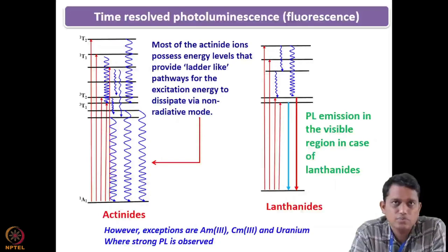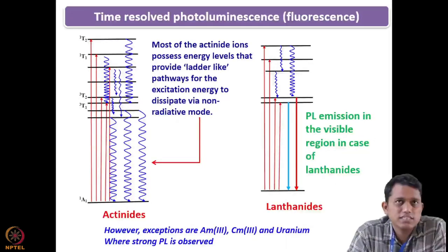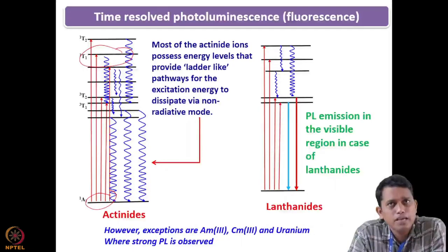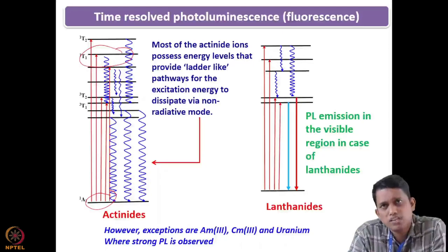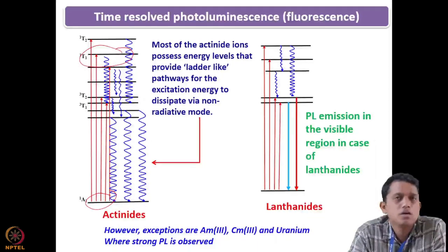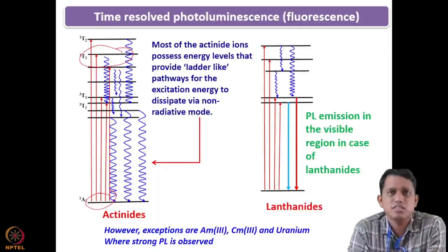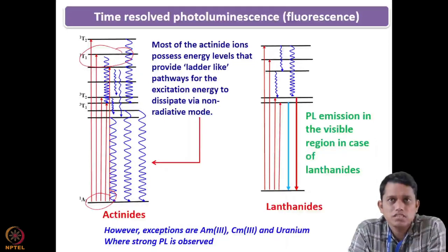For lanthanides and actinides: in lanthanides the energy levels are quite far apart compared to actinides — the actinides have ladder-like pathways between energy levels. Because of these ladder-like pathways in actinides, when you excite from the ground state to any upper state, most of the photons come back to the ground state just by a non-radiative decay process. So many actinides are not fluorescent. In lanthanides, these ladder-like pathways are missing, so most lanthanides give very good luminescence. In actinides, luminescence is mainly from americium, curium, and uranium.